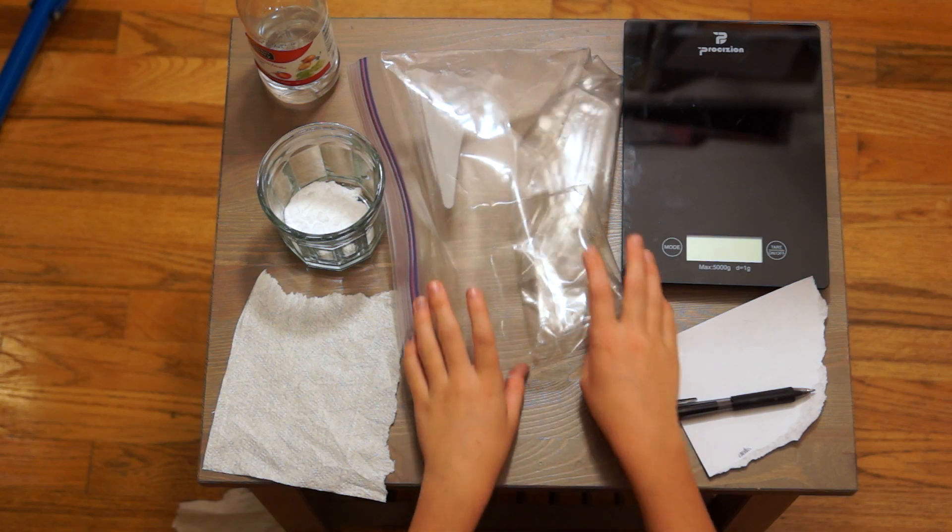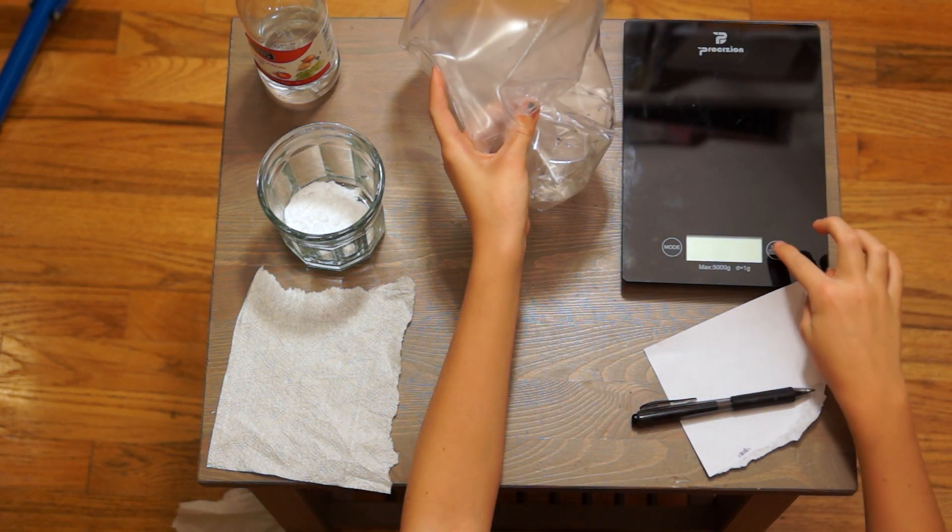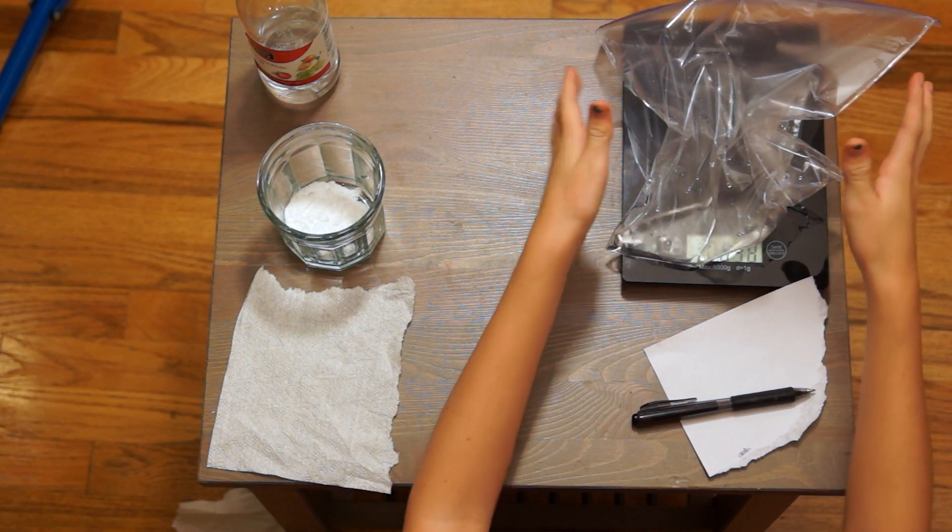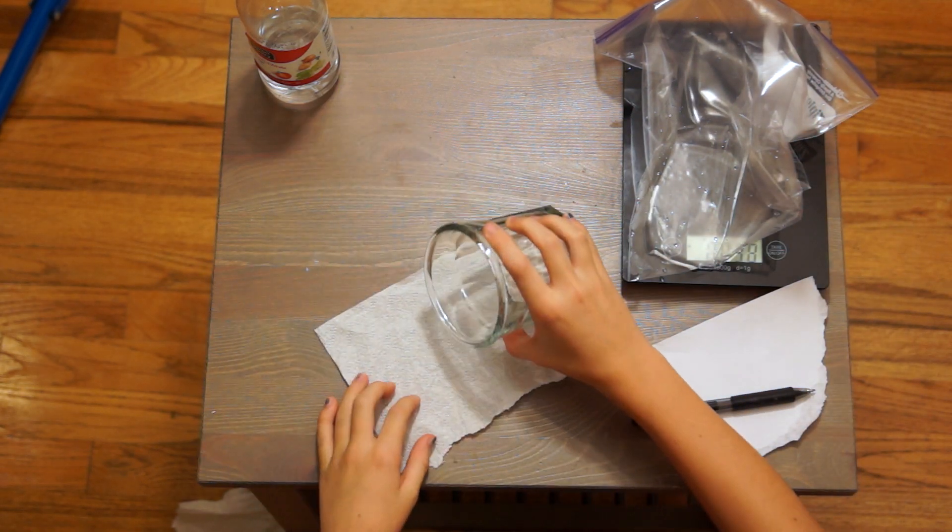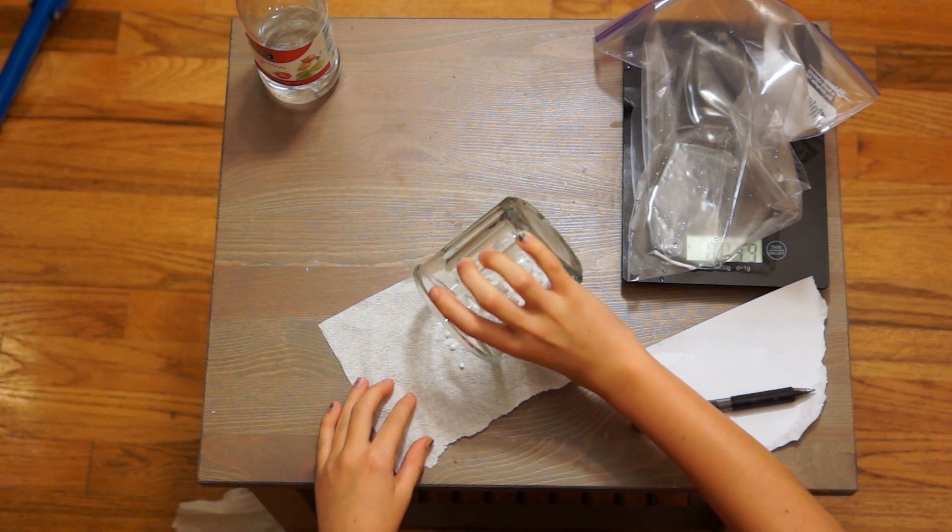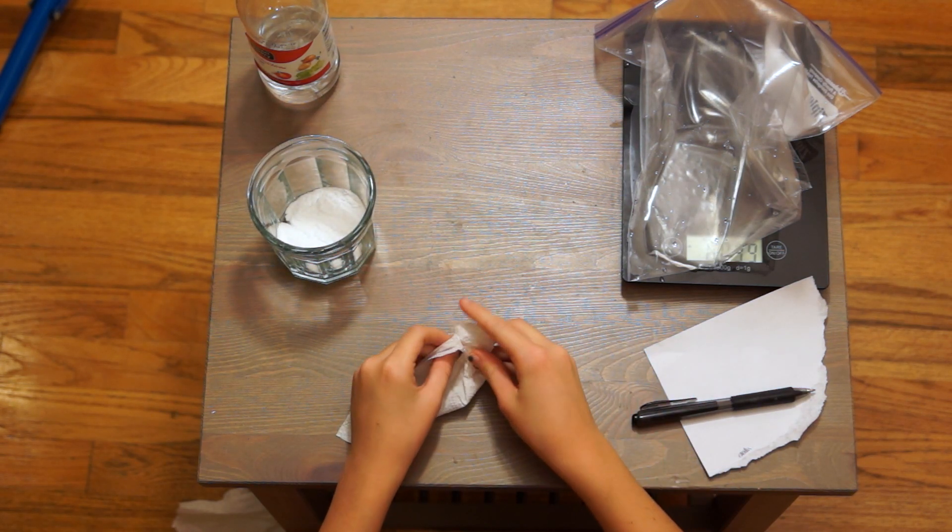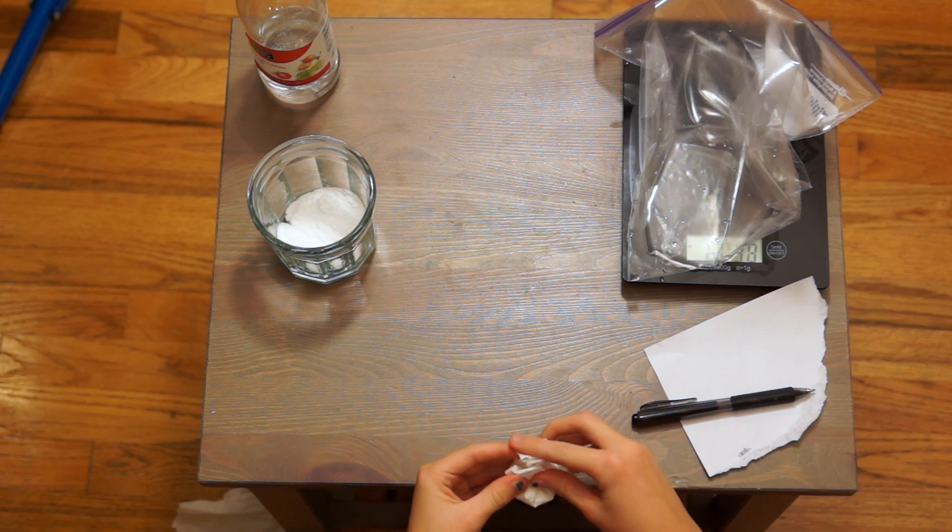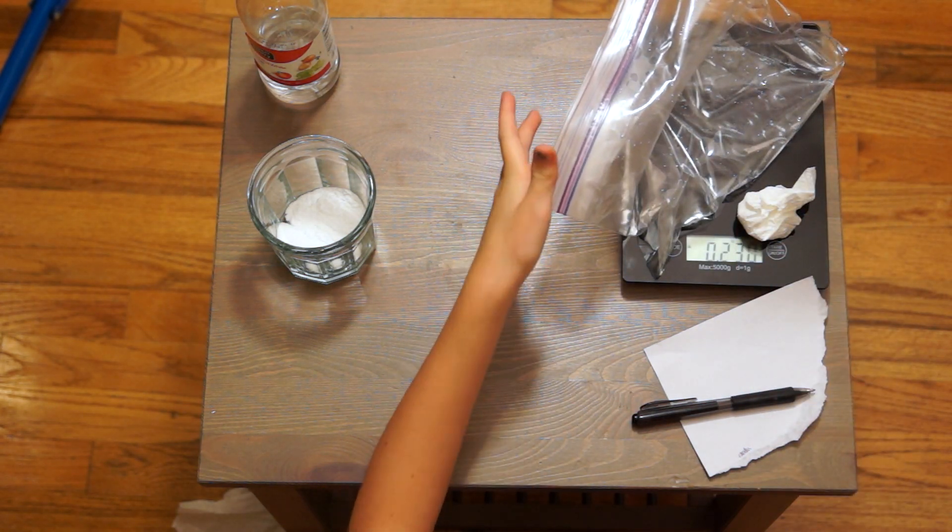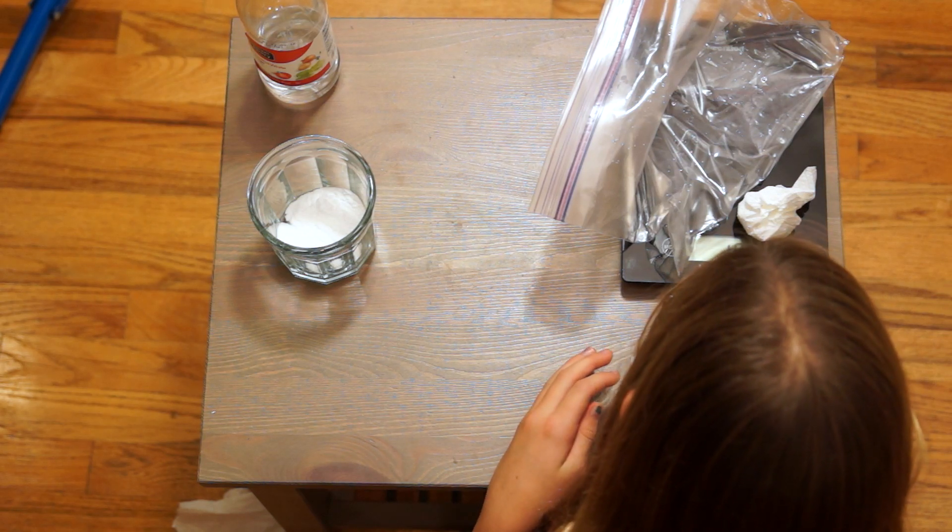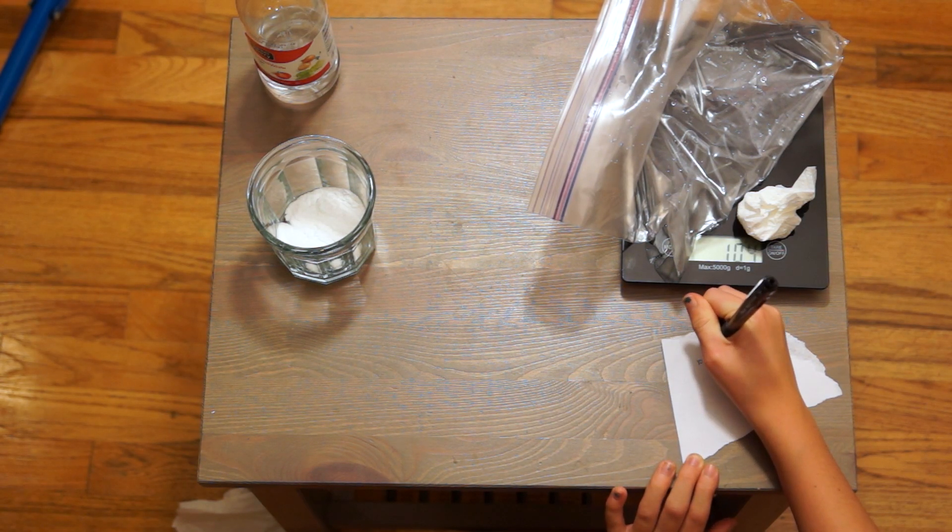The first thing I'm going to do is weigh everything. We have the vinegar. Put that on the scale. Give it a second. We have our vinegar. And then I'm going to put some baking soda into the napkin. You don't need a lot. I'm just going to put a little bit more. And wrap that up. And I'm also going to put that on there. All of that is 104 grams.